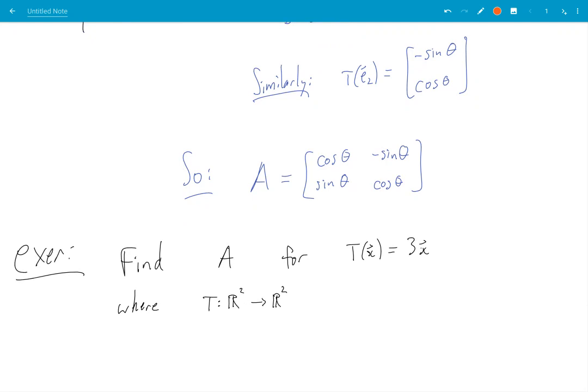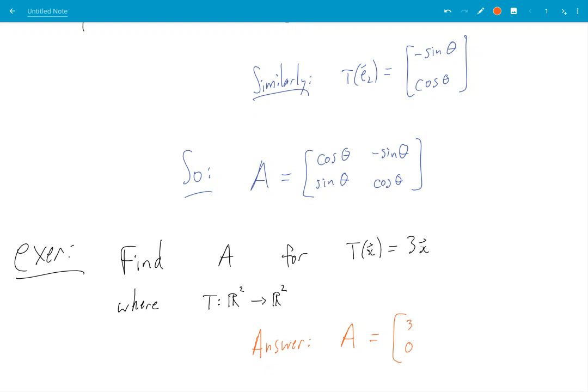Pause and try that. Okay, the answer here is A is equal to, well, you just triple E₁. That's your first column, and you triple E₂. And that's your second column.